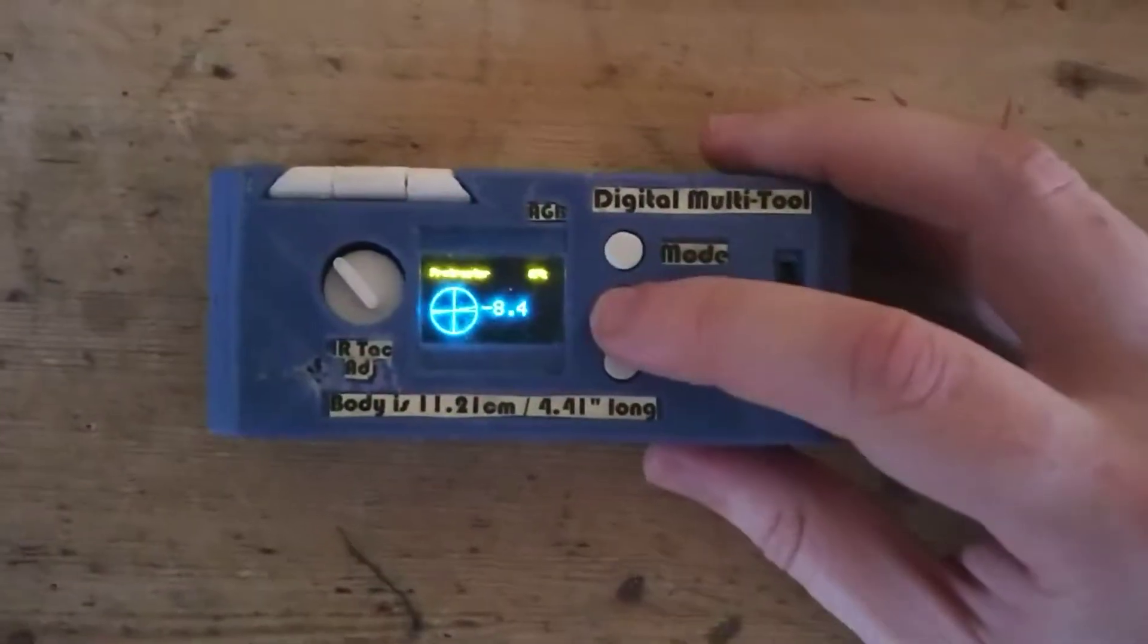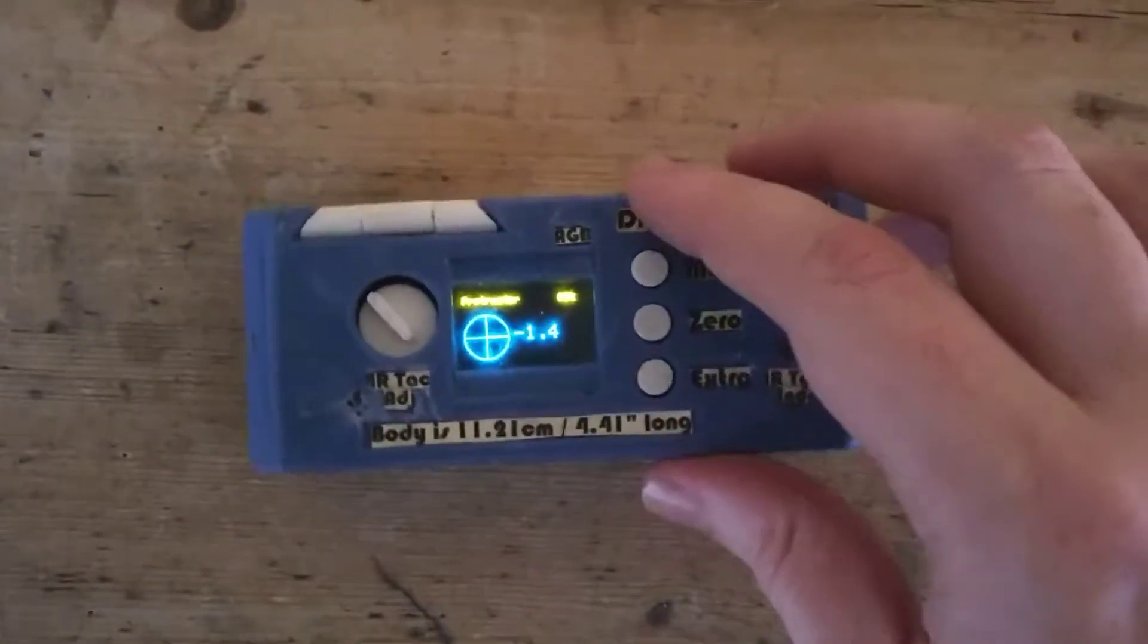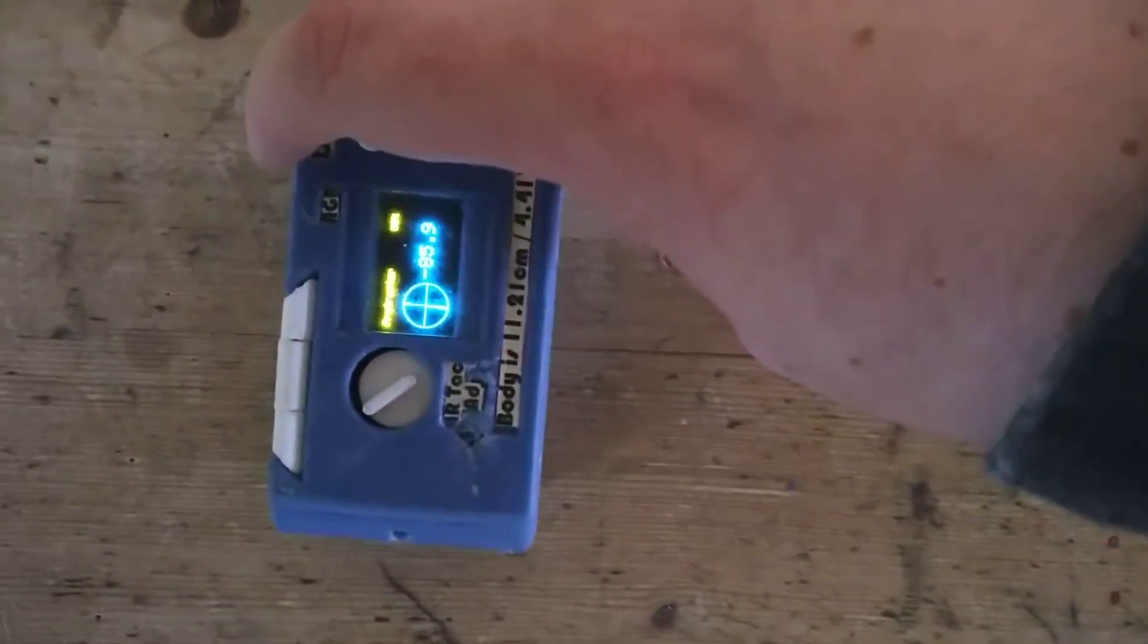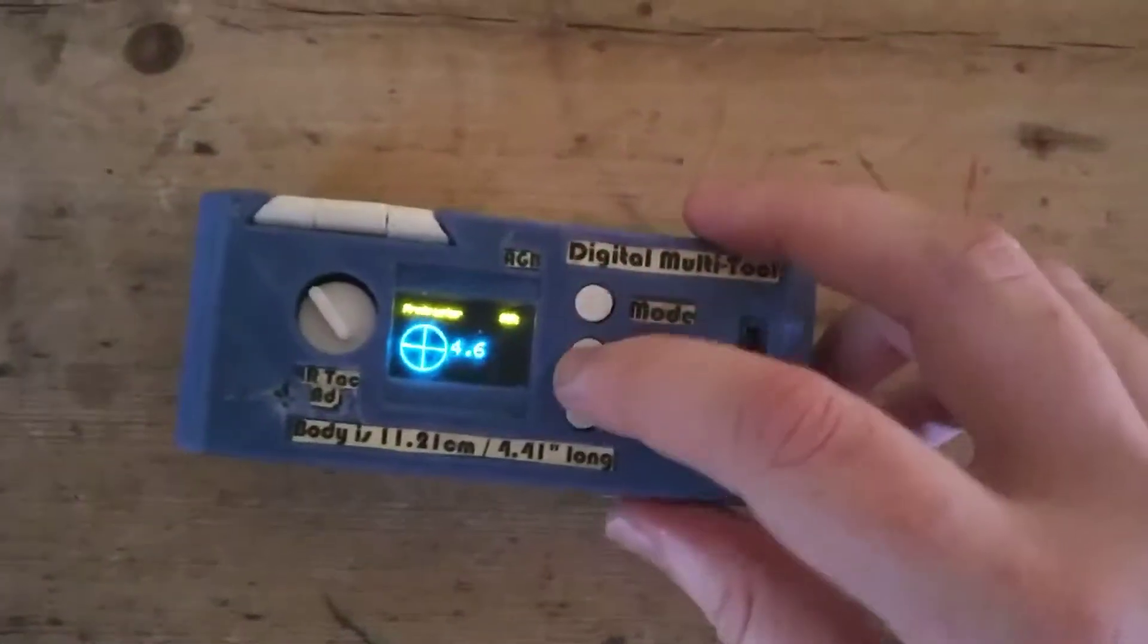Then we have a protractor, so if I hit zero and then move it like this you can see it gives you the angle of rotation.